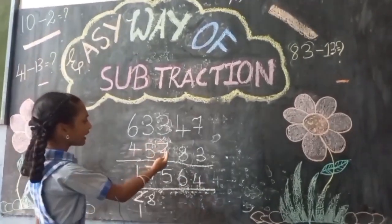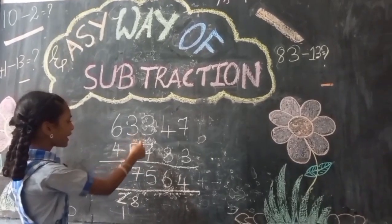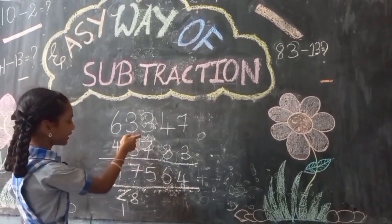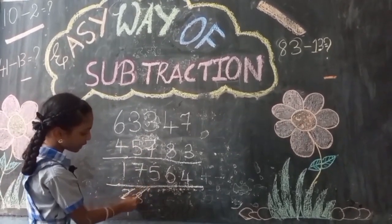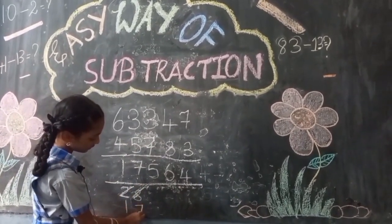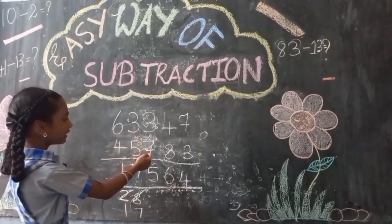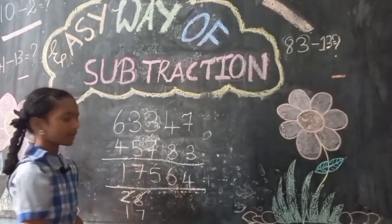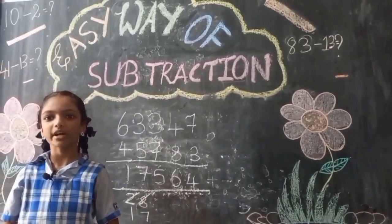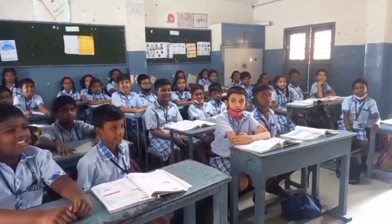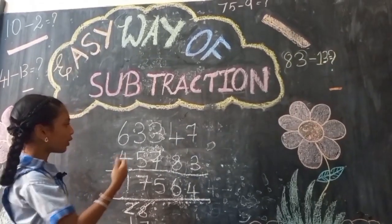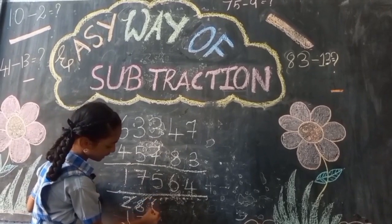Now in the next column, we have 3 minus 7. We cannot subtract 7 from 3, so reduce 1 from 8. Then check the complement of 7. What is the complement of 7? 3. Yes. So add 3 to 3, it is 6.